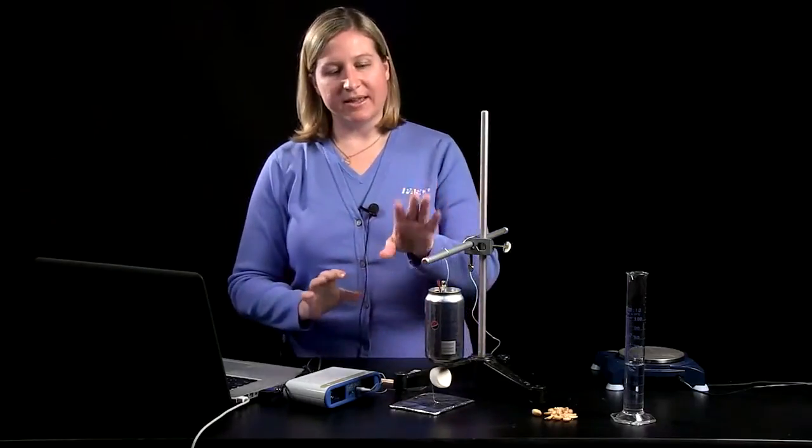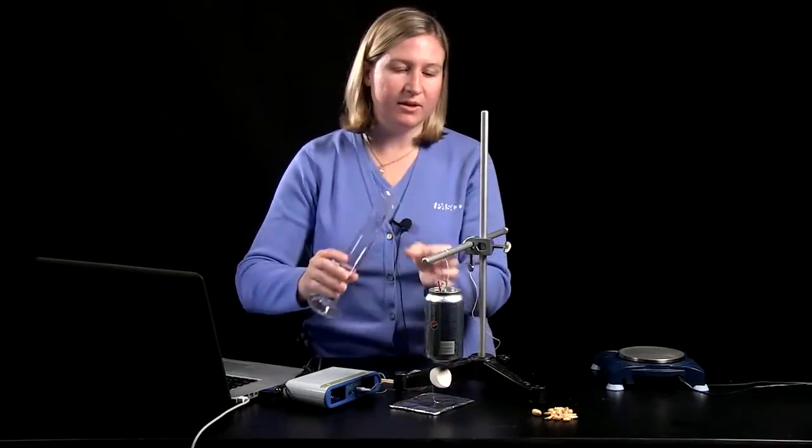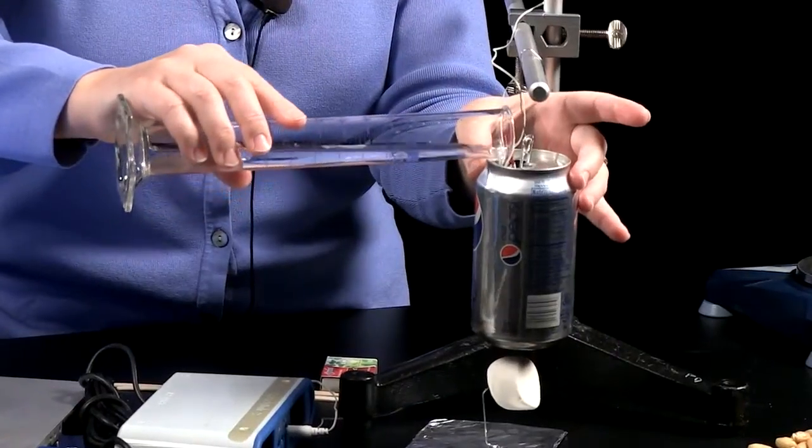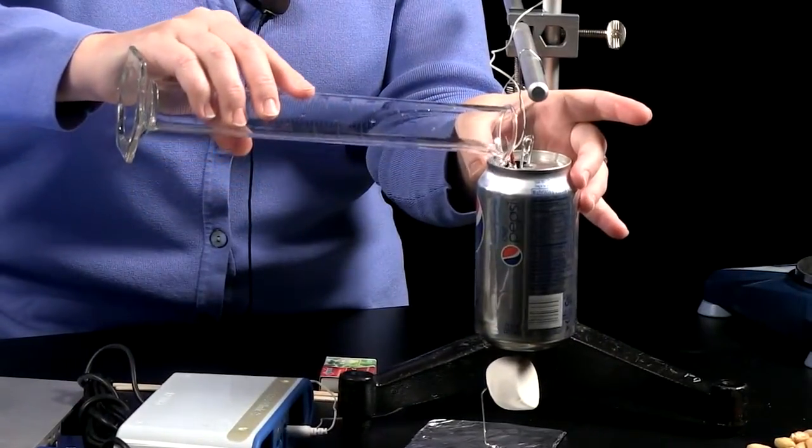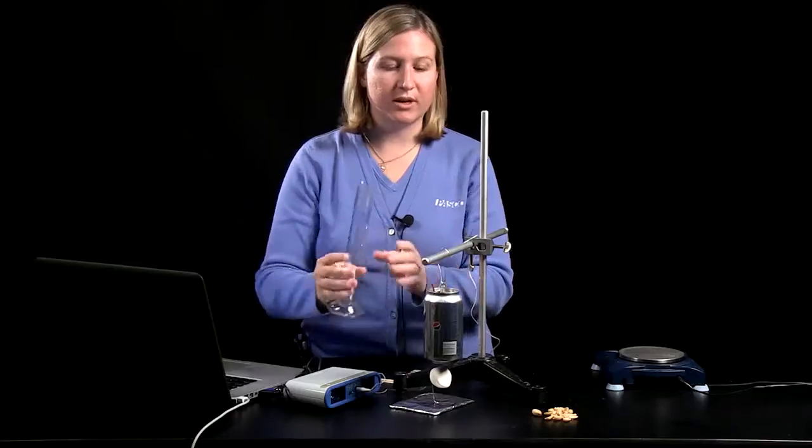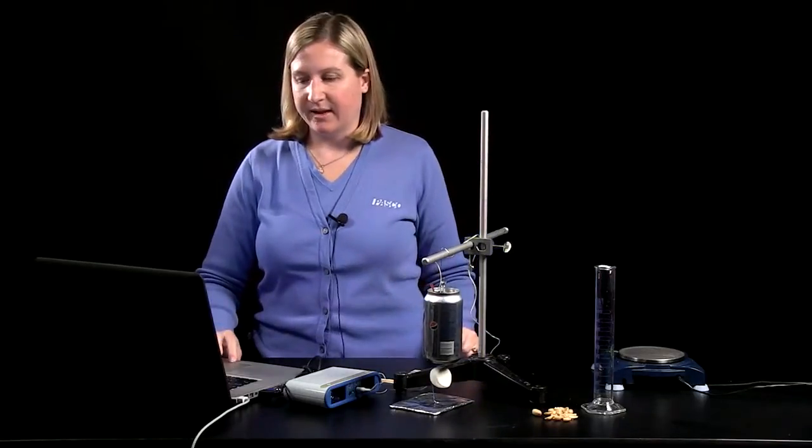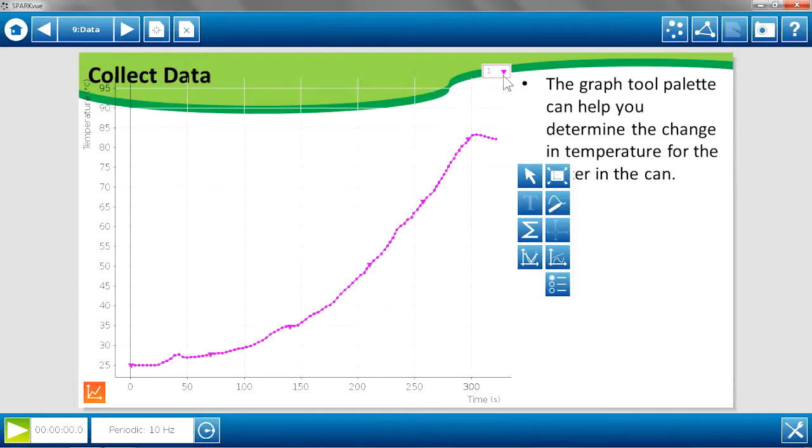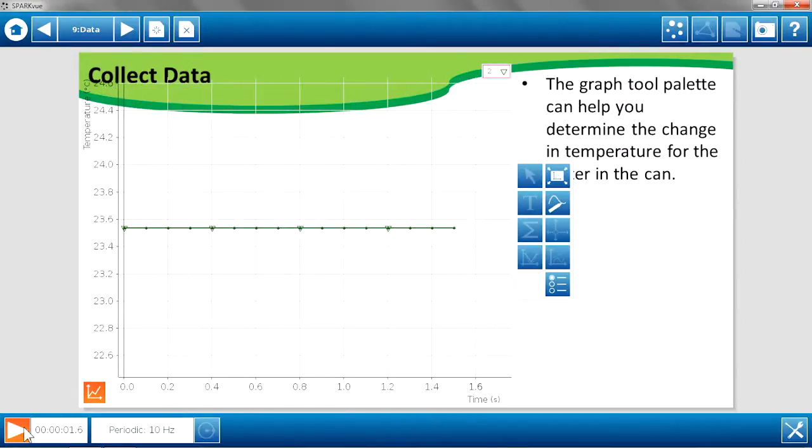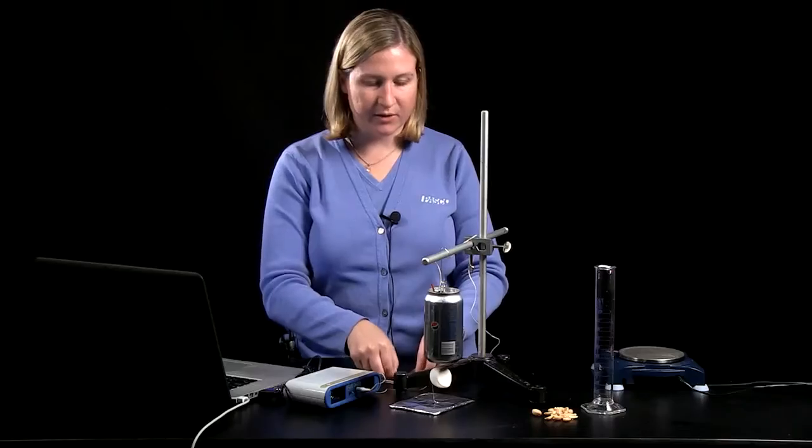So I've got my can. I'm going to add 50 milliliters of water to it. I'm going to start recording temperature of the water in the can by pressing play. You'll see on the graph I already have data for the peanut. I'm going to hide that for the moment so that you're seeing only the data for the marshmallow. So you can see the temperature is remaining the same. The temperature probe is just sitting in the water right now.